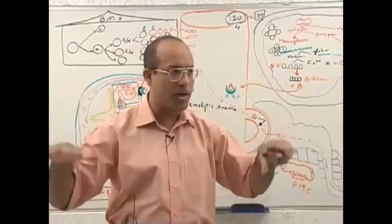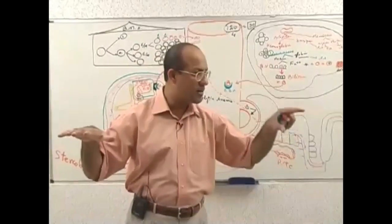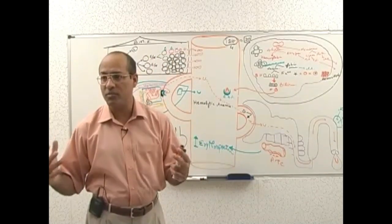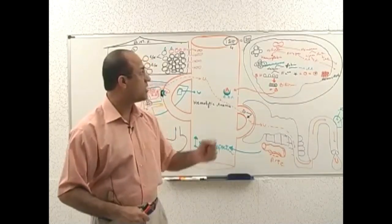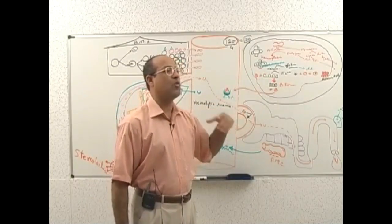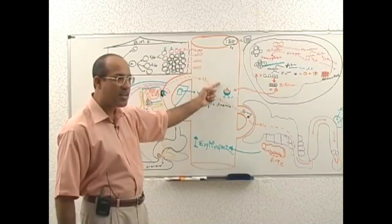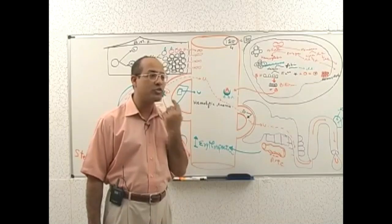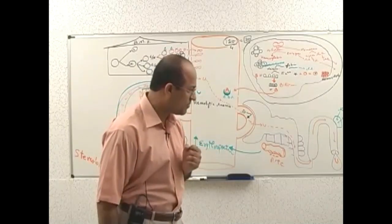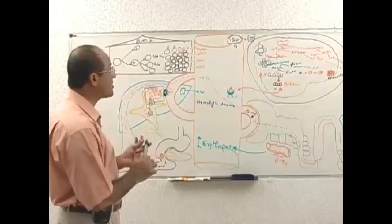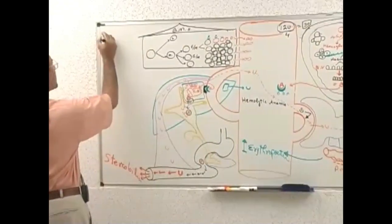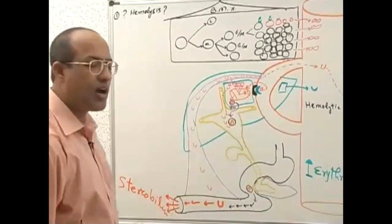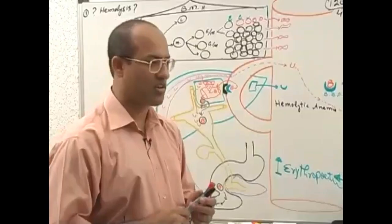When a patient comes and you suspect hemolytic anemia, you must look for evidence of excessive RBC breakdown and evidence of bone marrow compensation. First, you have to confirm: is there hemolysis or not? Is there any evidence of hemolysis? Let's answer that question.